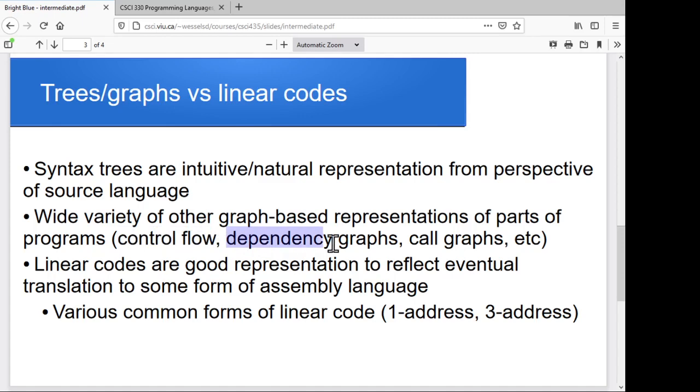We'll look at dependency graphs where you keep track of which things have been declared and which other ones depend on those. We'll look at call graphs that just model the potential function calls and returns in a program. So lots of different graphical representations that are used for different things. This is where the idea comes in that we might use different internal representations at different points in the compilation process. With the linear codes, there's a variety of different linear codes out there. We'll look at just a couple.